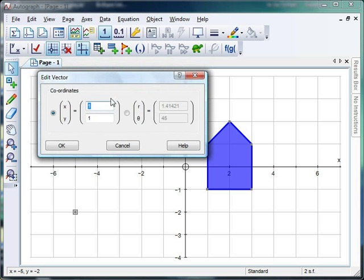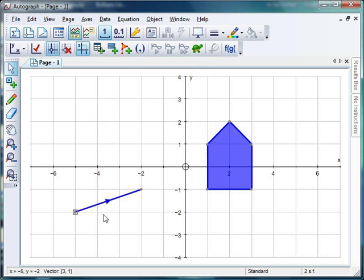Now, and I've got this edit vector window. So I'm going to go for a vector of, let's think, let's go for three and one. So, three to the right and one up. Click OK and there's the vector there.